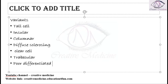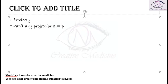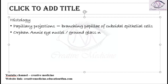On histology, in papillary carcinoma you will see presence of papillary projections — these are actually branching papillary structures. In papillary carcinoma of the thyroid, we see branching papillae lined by cuboidal epithelial cells. There is one important feature called Orphan Annie nuclei, also called ground glass Orphan Annie nuclei.